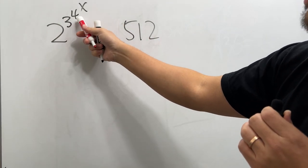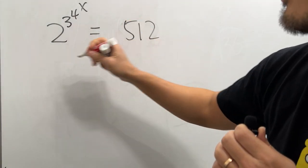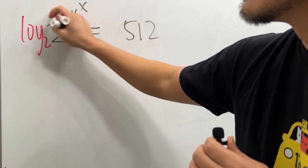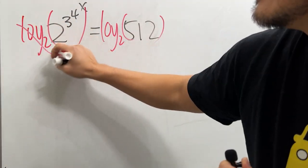How can we solve the equation 2 to the 3 to the 4 to the x powers equal to 512? Well, first let's take log base 2 on both sides because this way this and that will cancel.